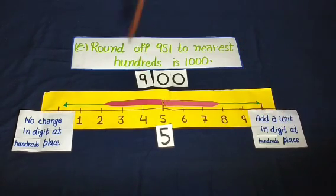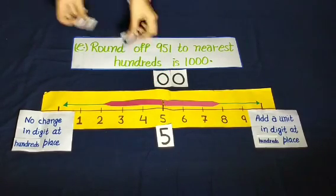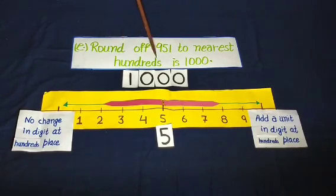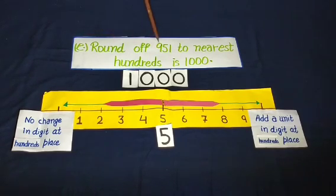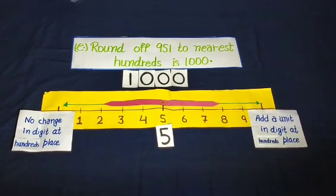Here the digit at the tens place is 5, so add a unit to the hundreds place. The digit 9 becomes 10, so round of 951 to nearest hundreds is 1000. The statement says round of 951 to nearest hundreds is 1000, so it is true.